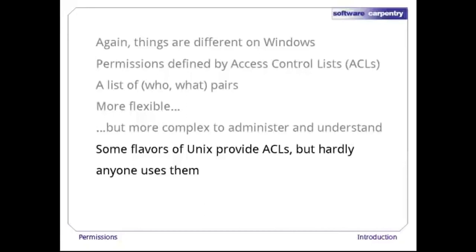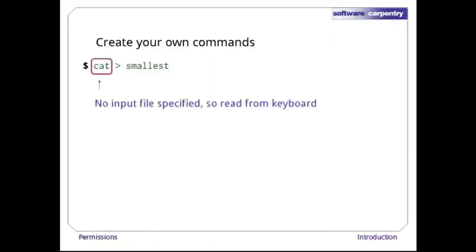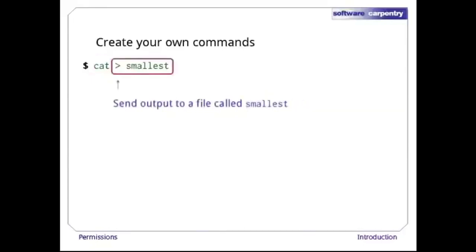Now that we understand how permissions work, it's time to start creating our own programs. Let's start by running 'cat > smallest'. Since we didn't specify an input file, cat will read from the keyboard, i.e., its input will be whatever we type. And since we put '> smallest' at the end of the command, the computer will send cat's output to a file called smallest — this command will copy whatever we type into a file called smallest.